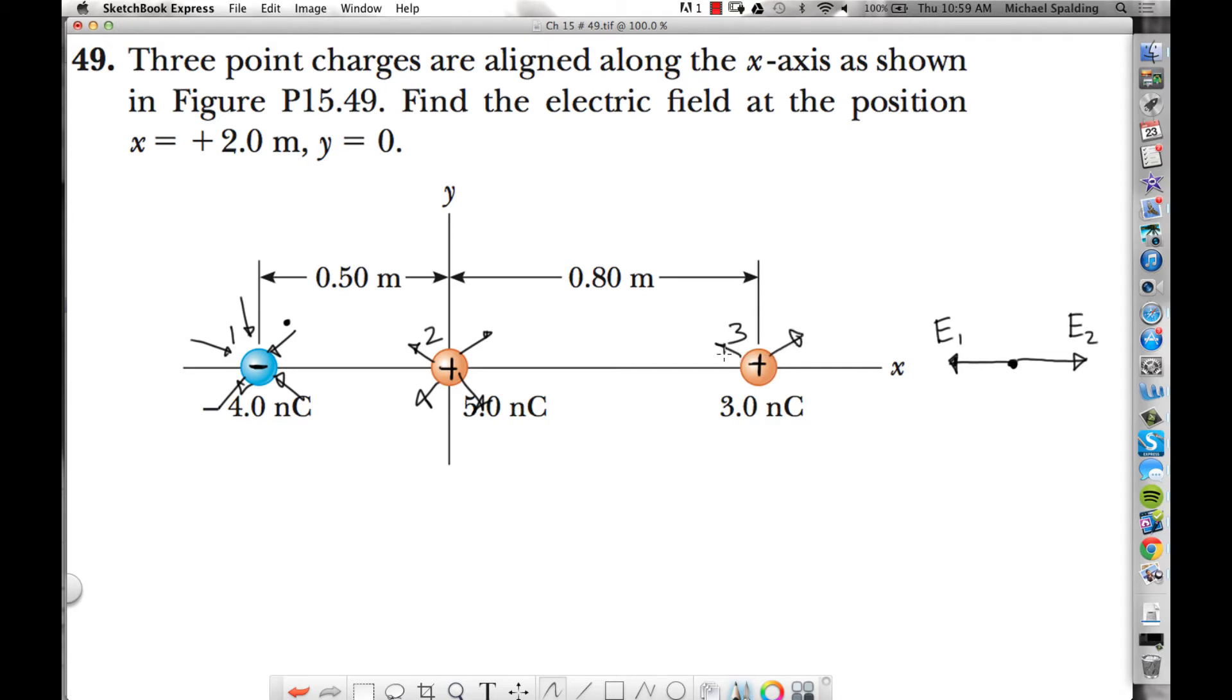Charge 3 is positive. Electric field goes out in all directions. So it's going out to the right. So we have E1 to the left, and then E2 and E3 point to the right.